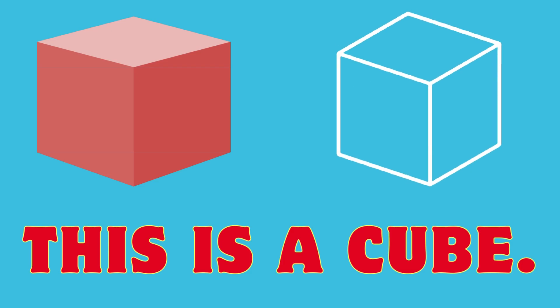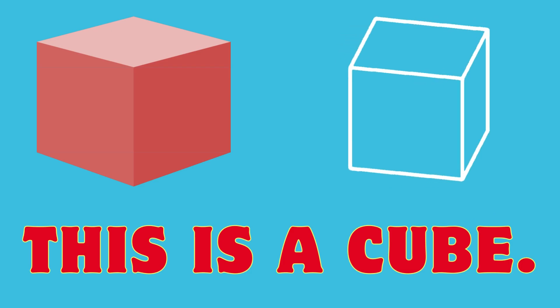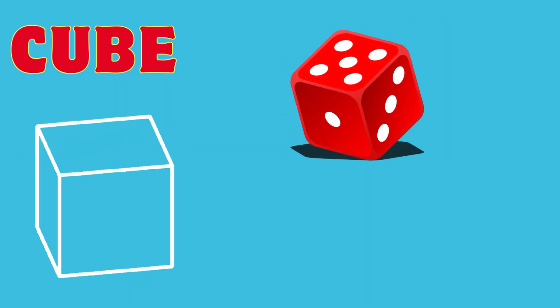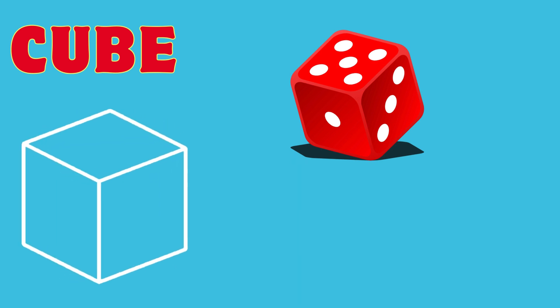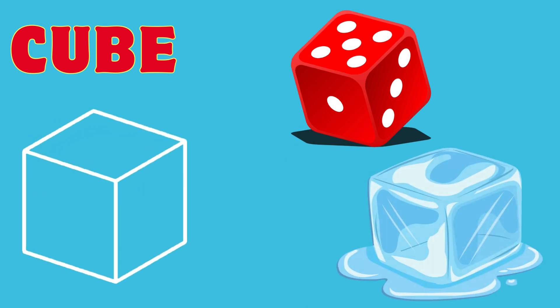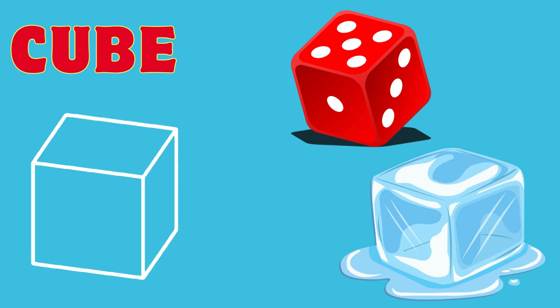What shape is it? This is a cube. This dice is a cube. This ice cube is cube-shaped.